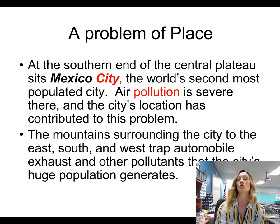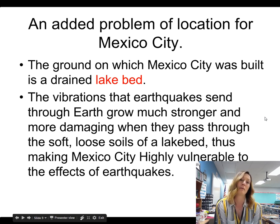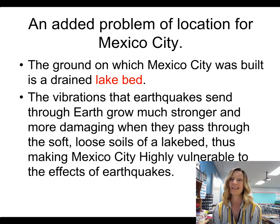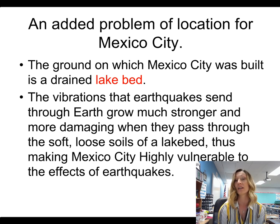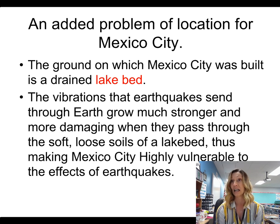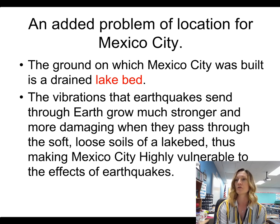What ends up happening is the mountains trap the air in the city, which means the polluted air from automobiles gets stuck there. So Mexico City has a huge issue with air pollution. Another problem is that it was built on what used to be a lake — it is actually built on a drained lake bed, so that ground is less stable. That's where Lake Texcoco once was, and when we learned about the Aztec Empire, Tenochtitlan was a city on an island in that lake, which has since been drained. So you have to worry about loose soil, and if there's ever an earthquake, buildings come down pretty easily because the ground is less sturdy.